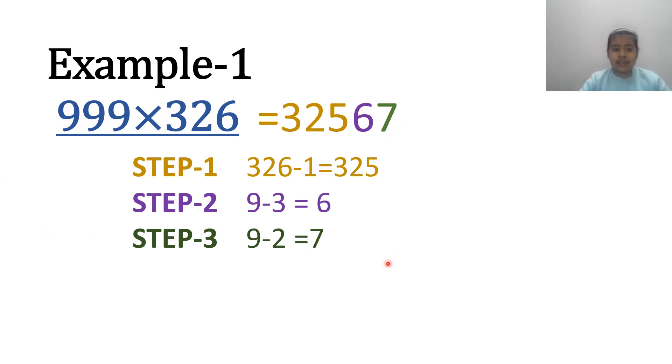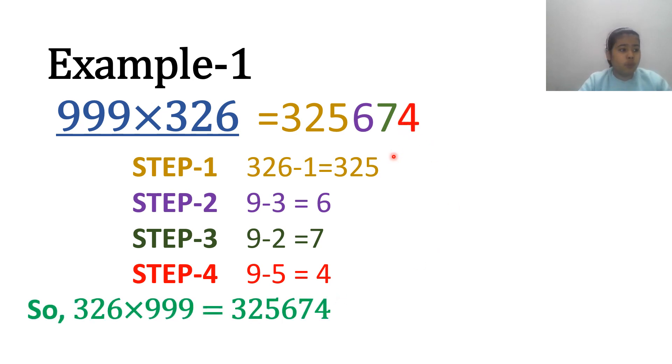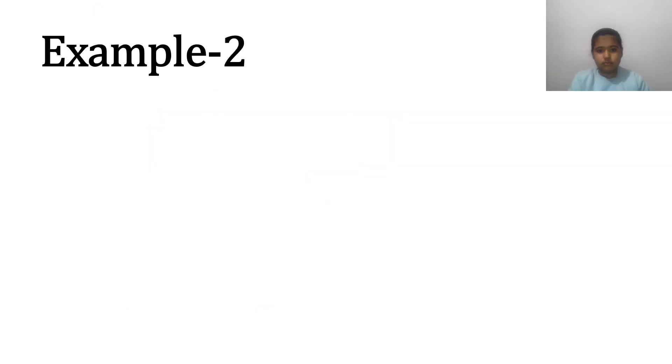Step 4. Take the last 9 and subtract 5 from it. We get 4. Write it down after 7. So, we got the product 325,674.